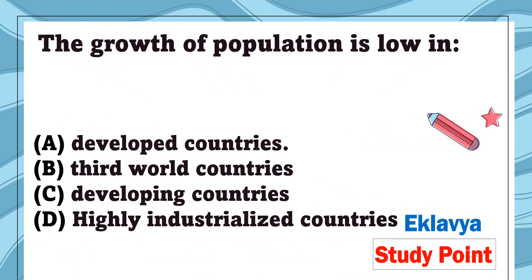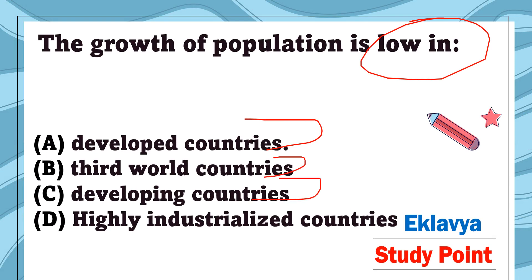Question 10: The growth of population is low in — developed countries, third world countries, developing countries, or highly industrialized countries. The correct answer is developed countries, because in developed countries people know about family planning and population growth is low.